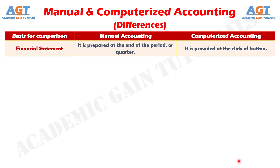Number 8. In a manual accounting system, the financial statement is prepared at the end of the period, that is, the financial year. On the contrary, the financial statement is provided at the click of a button in the computerized accounting system.